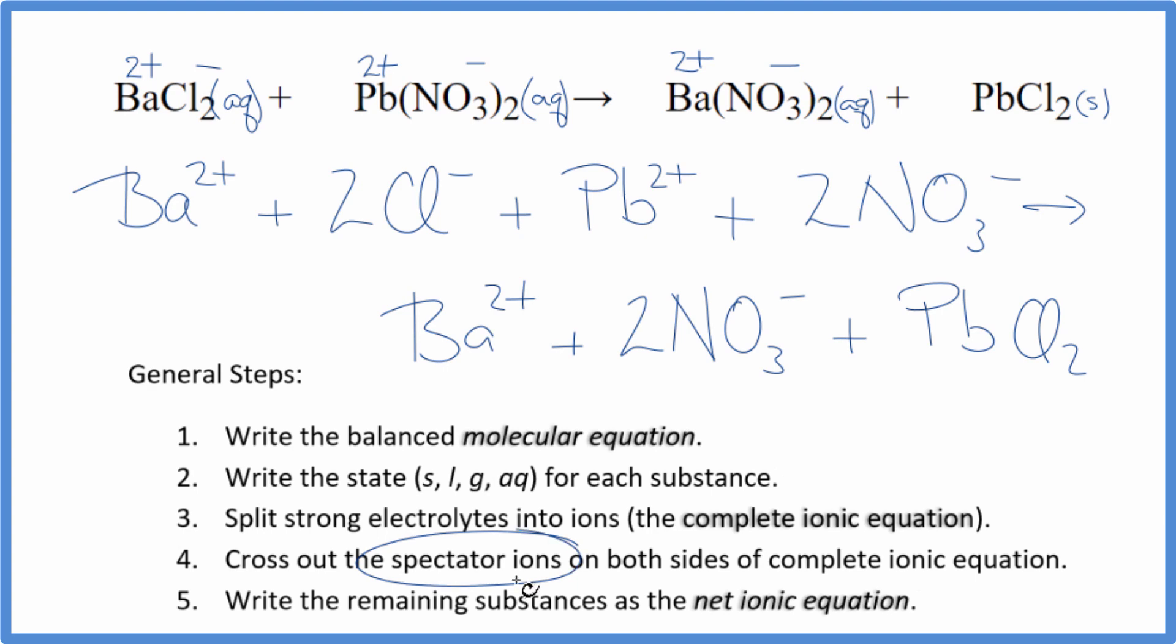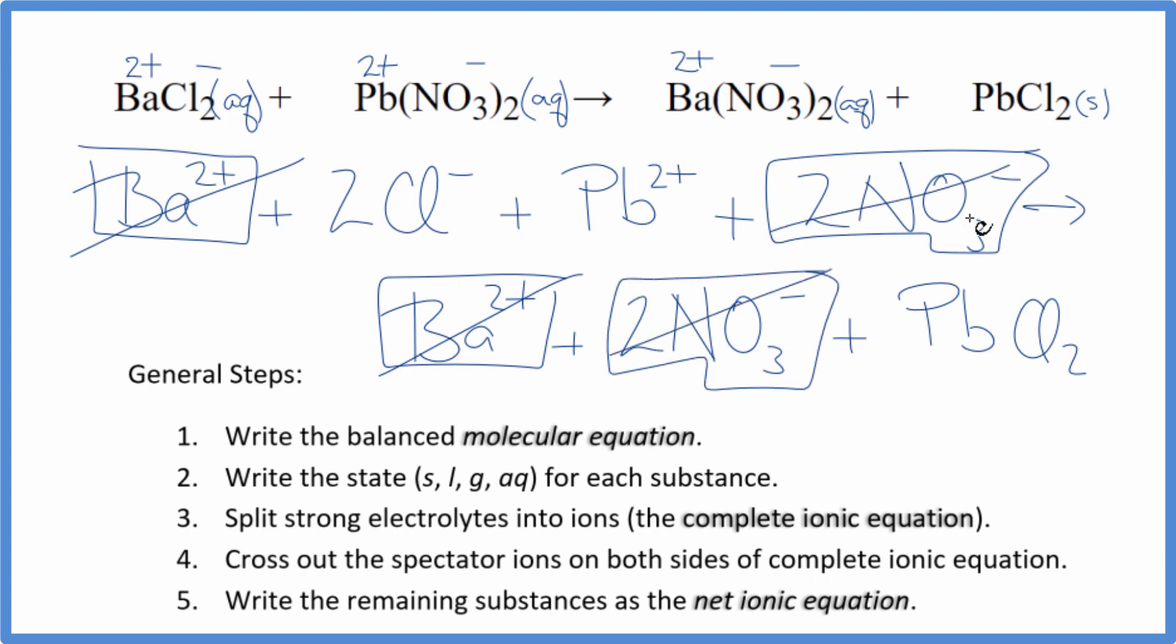Now we can cross out spectator ions. So as we look at this, we have our reactants and our products. In the reactants, I have this barium ion. I also have it in the products. That's a spectator ion. So on both sides, cross it out. I have two nitrate ions in the reactants and in the products. Spectator ions will be crossed out.